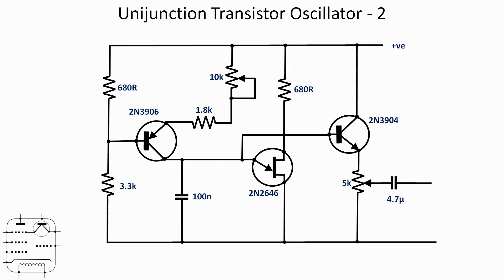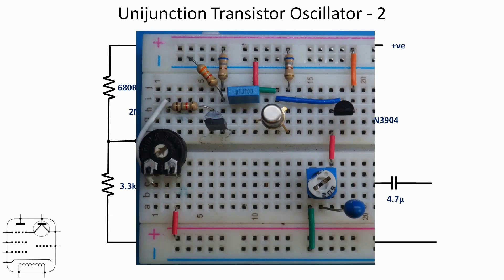The output we're still taking from the emitter of the unijunction transistor. All I've done on the right hand side with the 2N3904 is simply buffer the output so that whatever we end up doing with the output doesn't impact too much on the oscillation of the 2N2646 unijunction transistor. We've just got a 5k pot and a 4.7 microfarad DC decoupling capacitor on the output. Very straightforward layout on the breadboard, laid out roughly as per the circuit with the current adjustment pot on the left and the output level adjustment pot on the right. The blue capacitor at the bottom right is the DC decoupling capacitor that we'll take the output from.